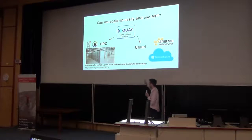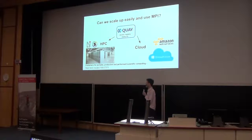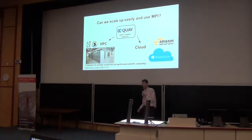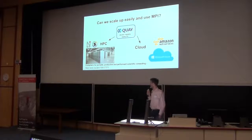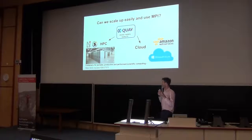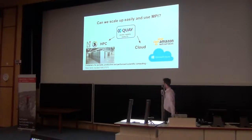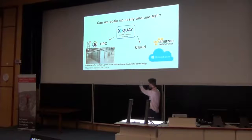We have actually tried doing this on HPC systems, using Singularity, which we've heard a lot about today, as well as Shifter, which is being developed by the people at NERSC in California. That seems to have a lot of traction with Cray systems. So if you want to run your Docker image on HPC and it's a Cray, you might end up using Shifter; otherwise you might end up using Singularity. We wrote a paper on this last year.